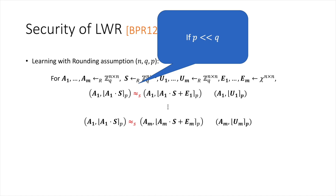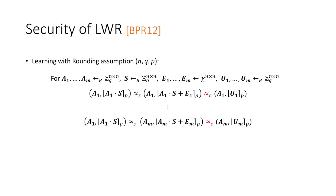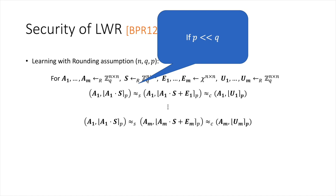The intuition is that if we round away enough lower-order bits, small noise in those bits does not affect the final output—so these two distributions are statistically indistinguishable. Once we have this, we can show the hybrid distribution is computationally indistinguishable from uniform, which follows directly from the LWE assumption. This is how we show the LWR assumption holds as long as LWE holds. However, the apparent limitation is that Q must be much greater than the rounding modulus P.